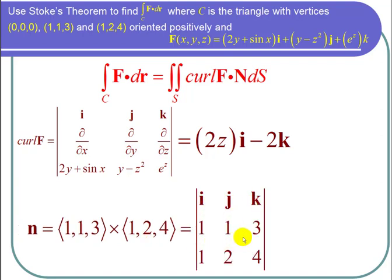I have i, j, k, 1, 1, 3, 1, 2, 4. And what I got was negative 2i minus j plus k.